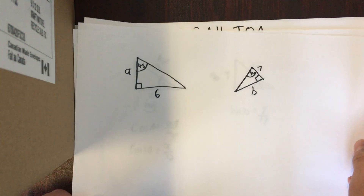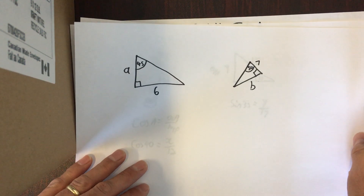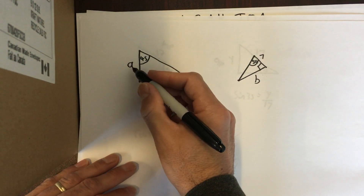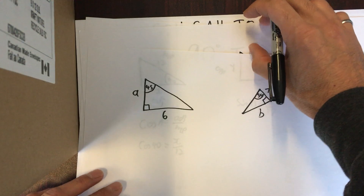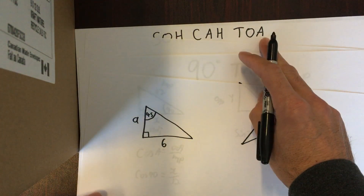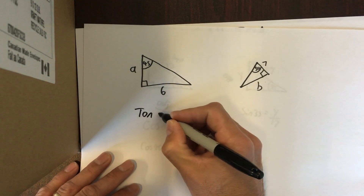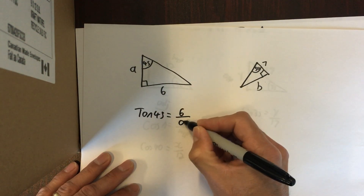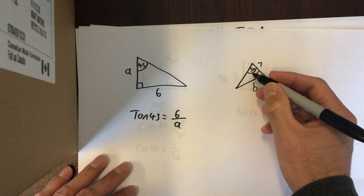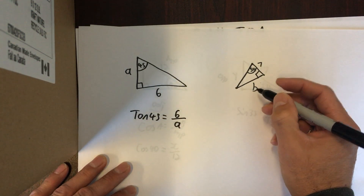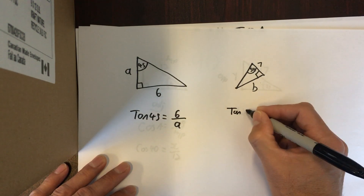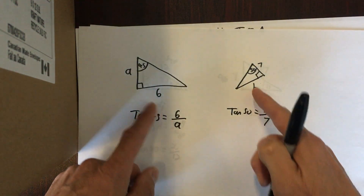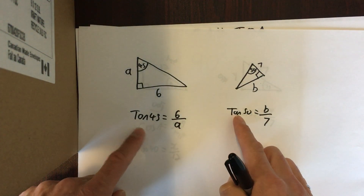Why don't you pause it and see if you can set up these two. The angle in question is 45 degrees. I know the opposite and I'm looking for the adjacent — tan has opposite and adjacent. The tan of this angle is the opposite side over the adjacent side. In this case, it is the opposite side that's unknown.